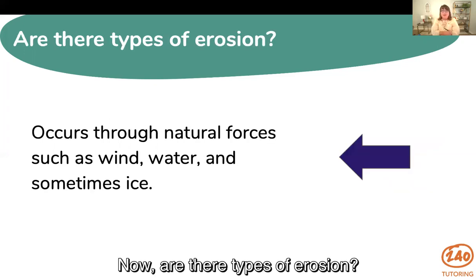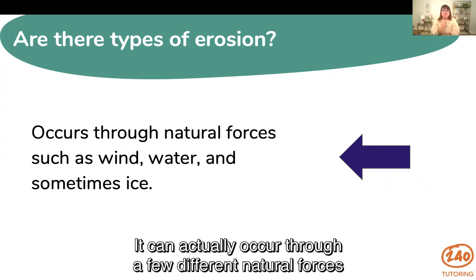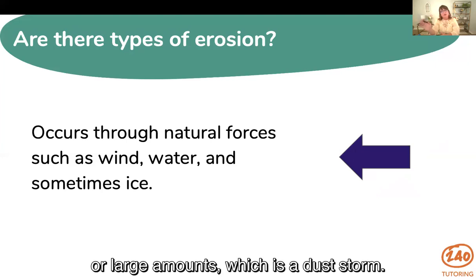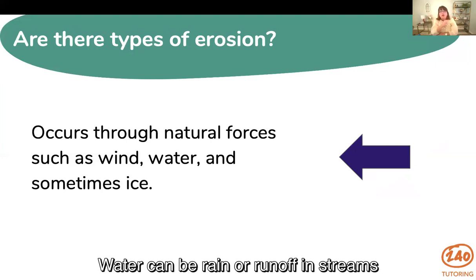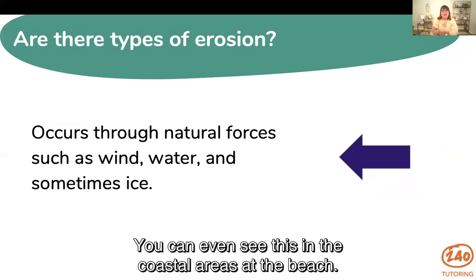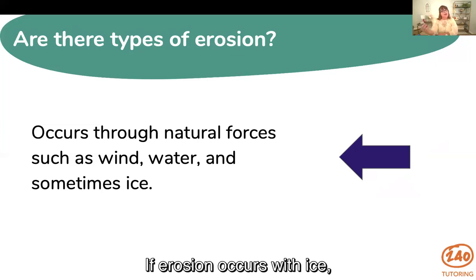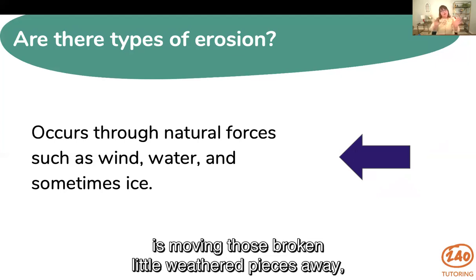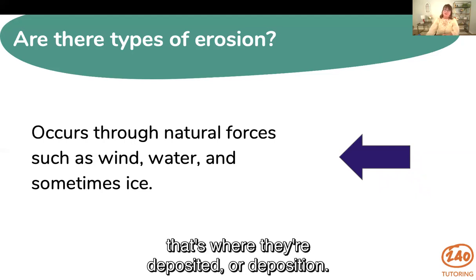Are there types of erosion? It can actually occur through a few different natural forces such as wind, water, and sometimes ice. Wind can be small amounts or large amounts such as a dust storm. Water can be rain, runoff in streams, or larger channels like rivers — you can even see this in coastal areas at the beach. If erosion occurs with ice, that's typically in the form of a glacier. So wind, water, and ice — the glacier is moving those broken, weathered pieces away. And where they land, that's where they're deposited, or deposition.